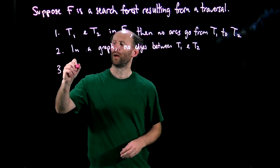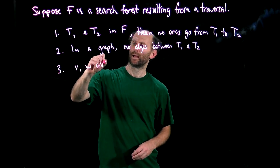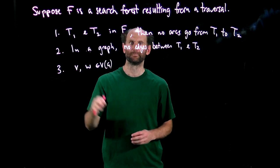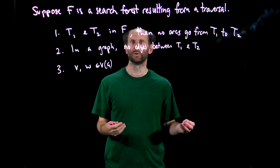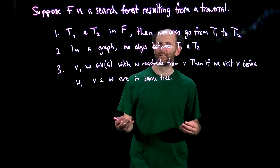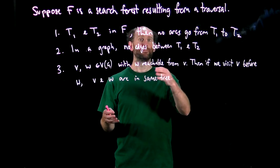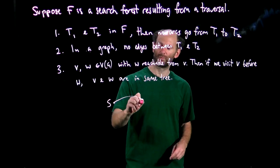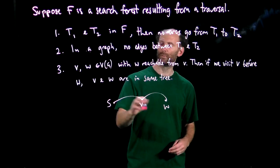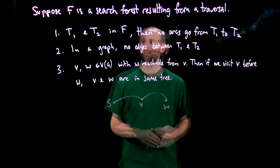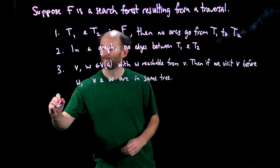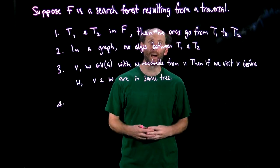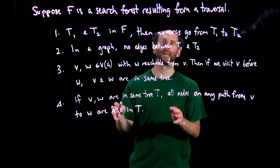Now consider nodes V and W in our digraph where W is reachable from V. If V is visited before W, then V and W will be in the same tree. If we have some root S, we can get from S to V and from V to W, so we can reach W from S. This extends further: if V and W are in the same tree T and there is a path from V to W, then every node on that path is also in T. The proof of that statement is left as an exercise.